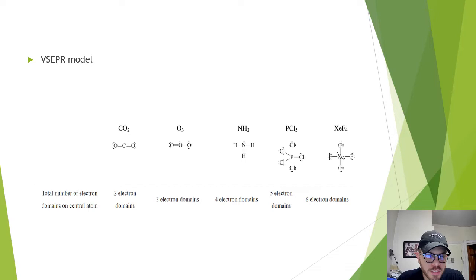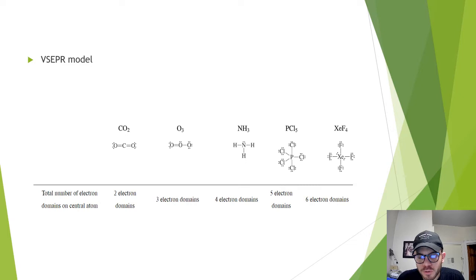Some VSEPR models we can see in these slides. We see carbon dioxide, which has two double bonds. Ozone has one double bond, one single bond, and one lone pair on the central atom, which is oxygen. It has three electron domains.